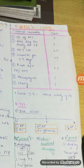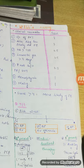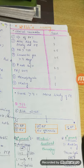The next criteria: past history of PE or DVT. The past matters, but only to a certain extent — it won't get a score of three, but 1.5.